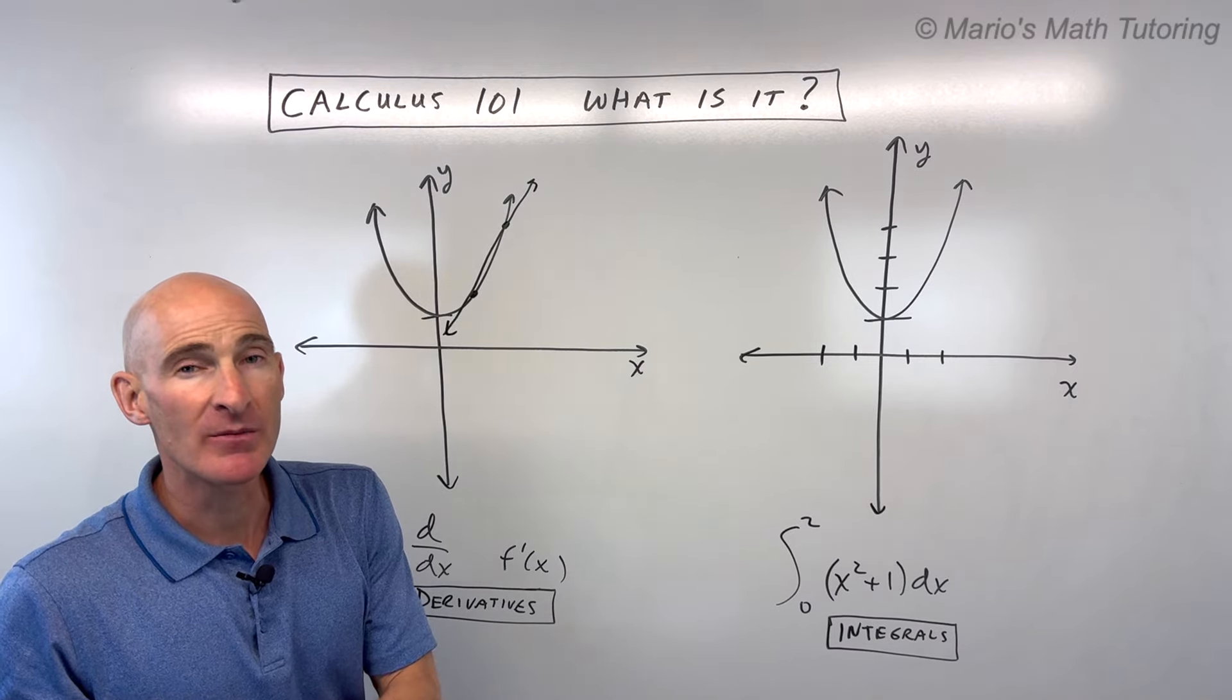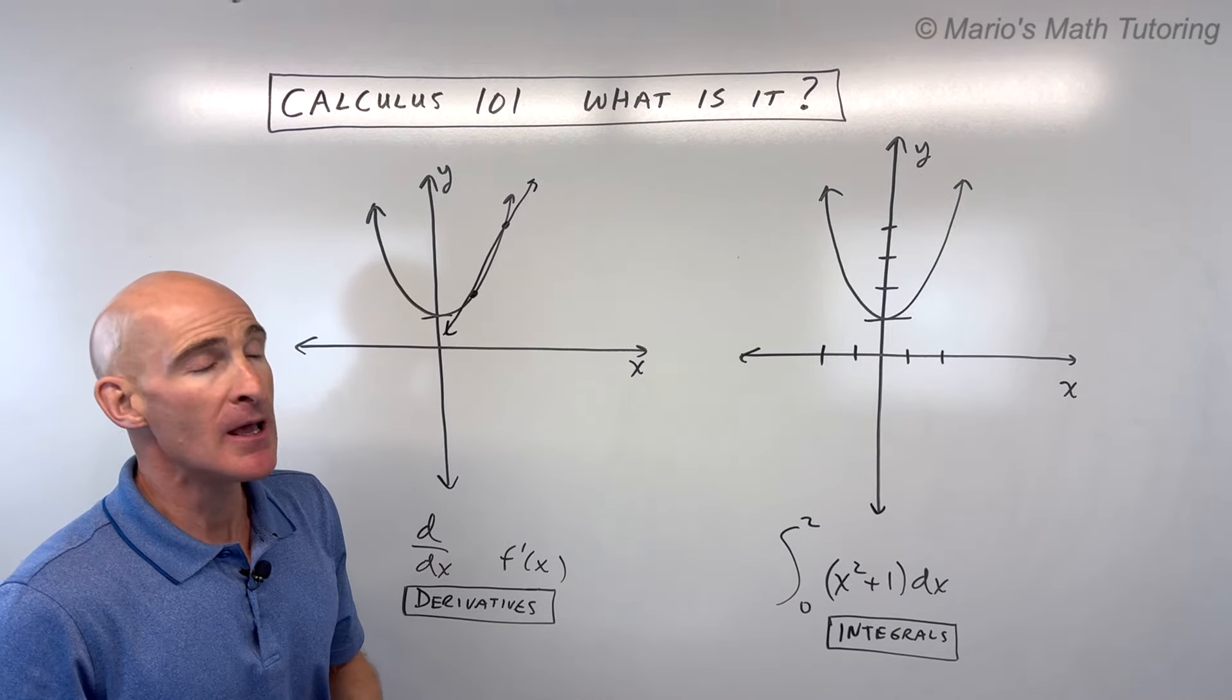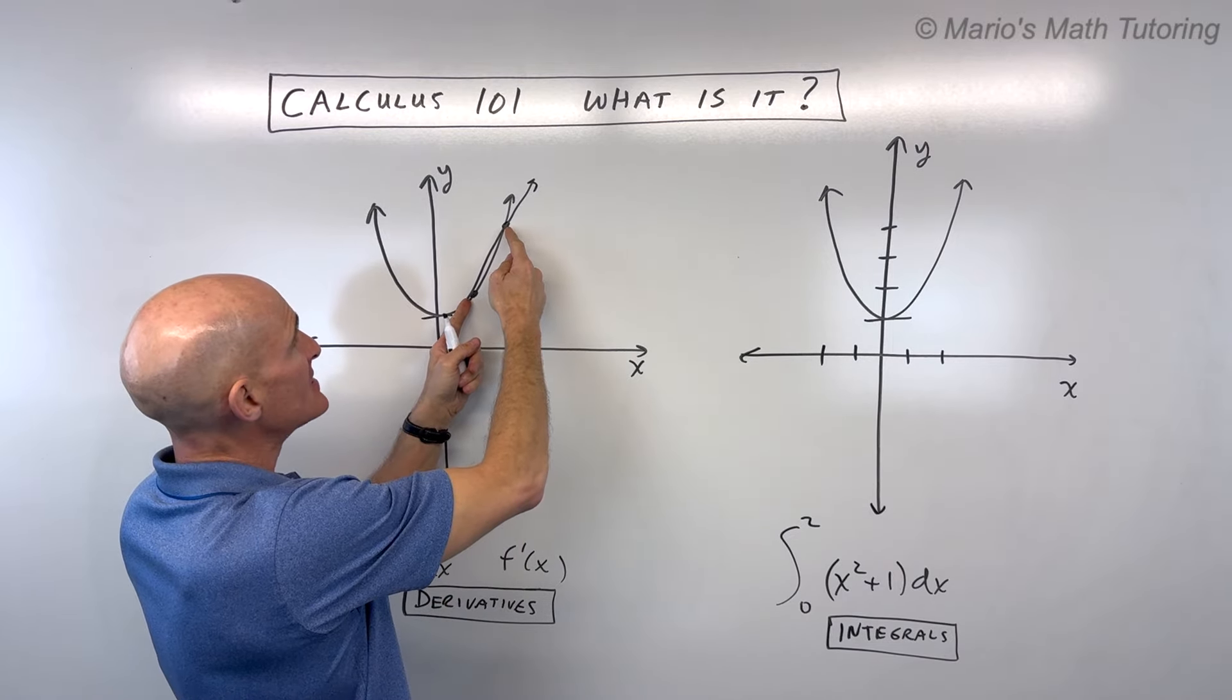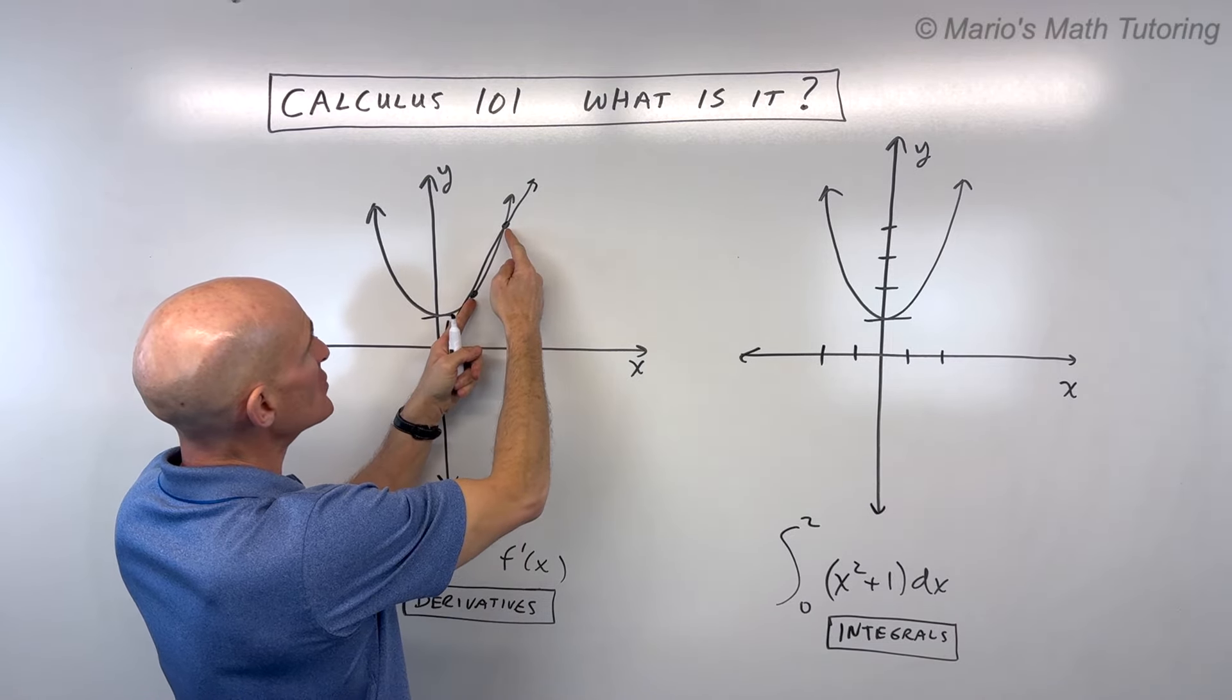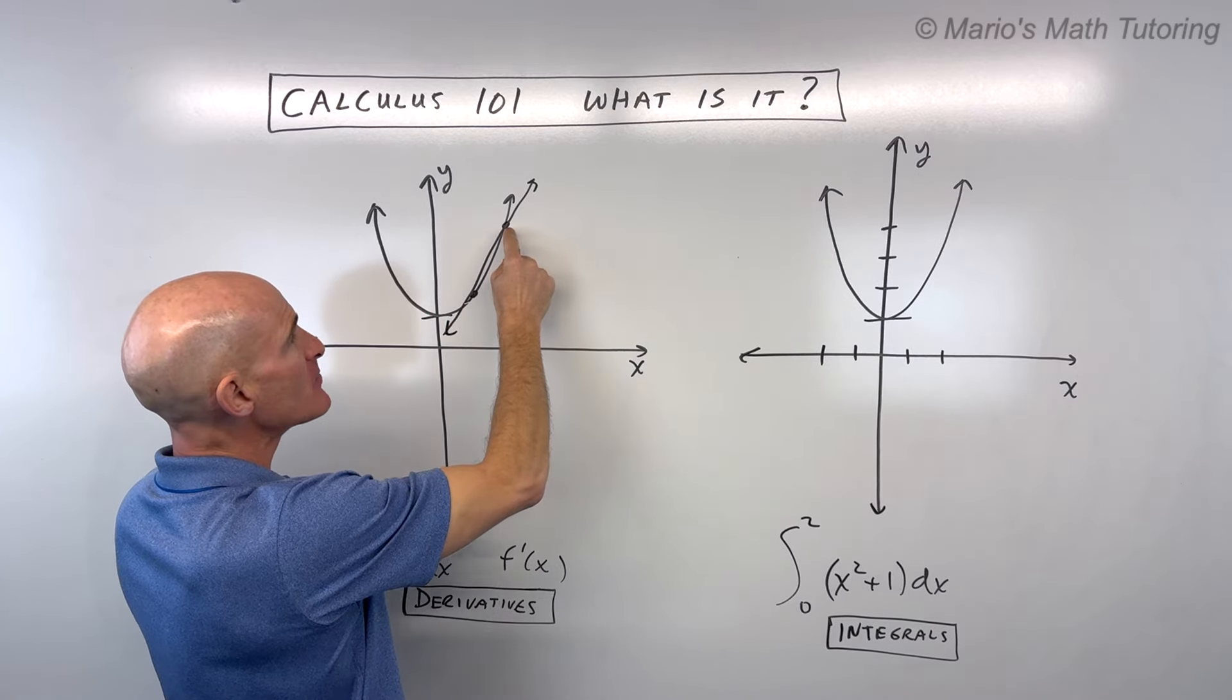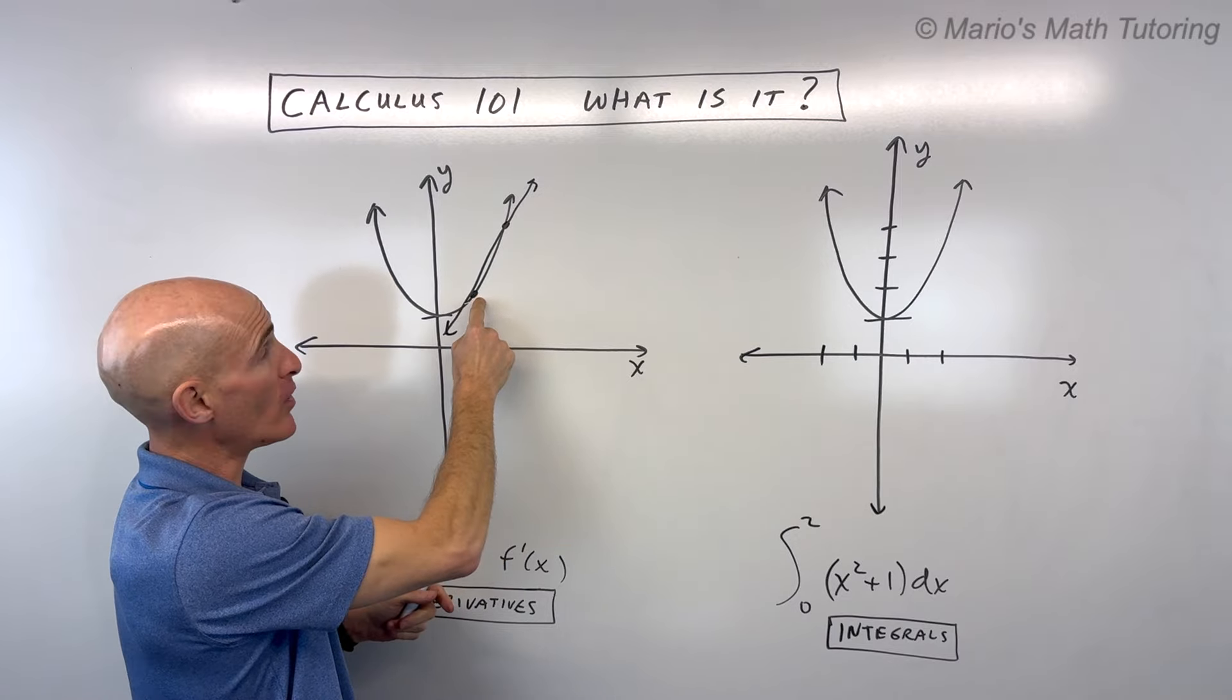But here's where the calculus comes in. And you may have learned this in pre-calculus when you learned the difference quotient. But what happens is if you take a limit, meaning as this distance, this horizontal distance between these two points gets smaller and smaller and smaller, this point here gets closer and closer and closer to this original point here, this point here.